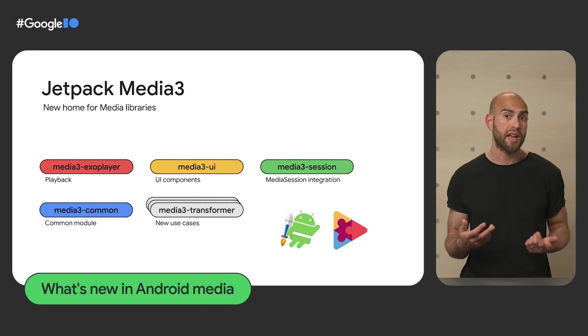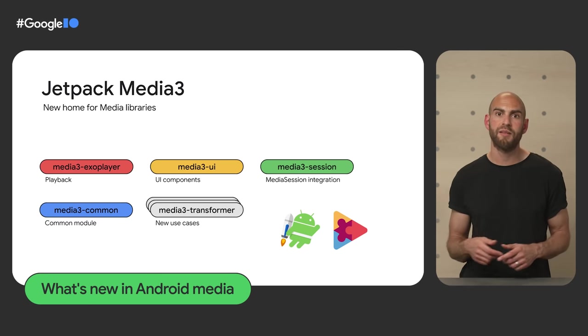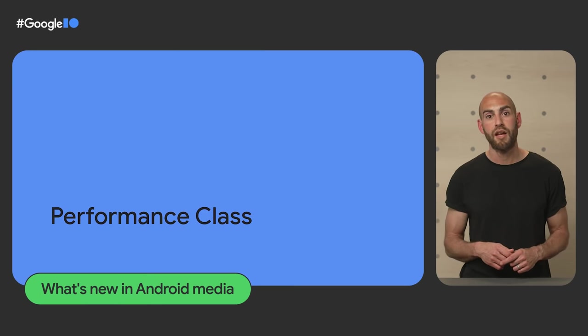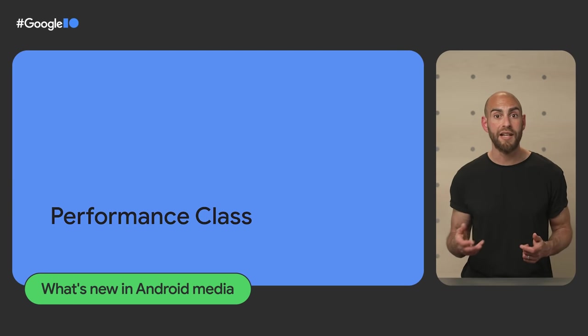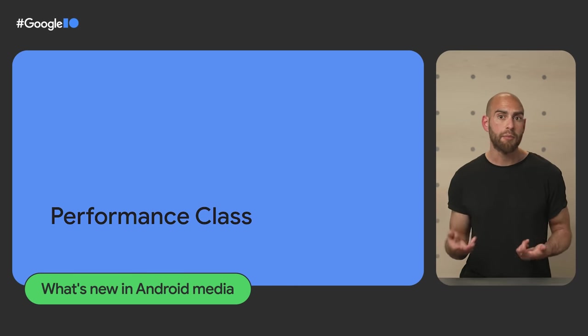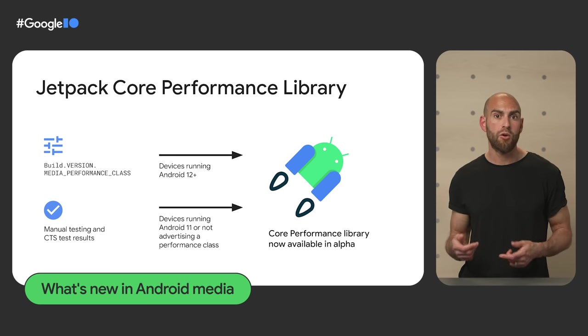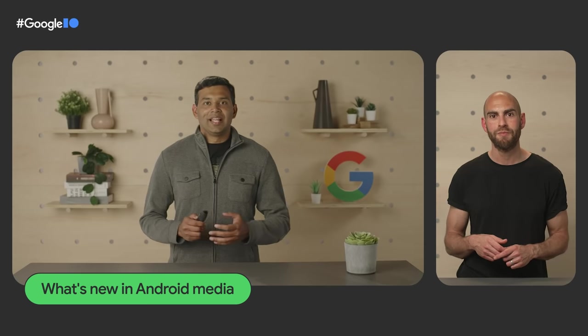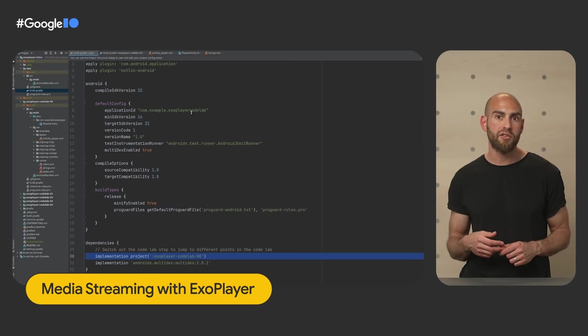We continue migrating from ExoPlayer to Jetpack Media3, which goes beyond playback to support editing and transcoding media — stay tuned for its first stable release. Android 12 introduced Performance Class; Android 13 adds Performance Class 13, reflecting new memory, media, and camera capabilities. We've also released a new Jetpack Core Performance library extending performance class support back to Android 11. Check out 'What's New in Android Media' for more, and there's a hands-on workshop to add media streaming to your app using the Media3 ExoPlayer library, covering playback setup, adaptive streaming, and responding to playback events.